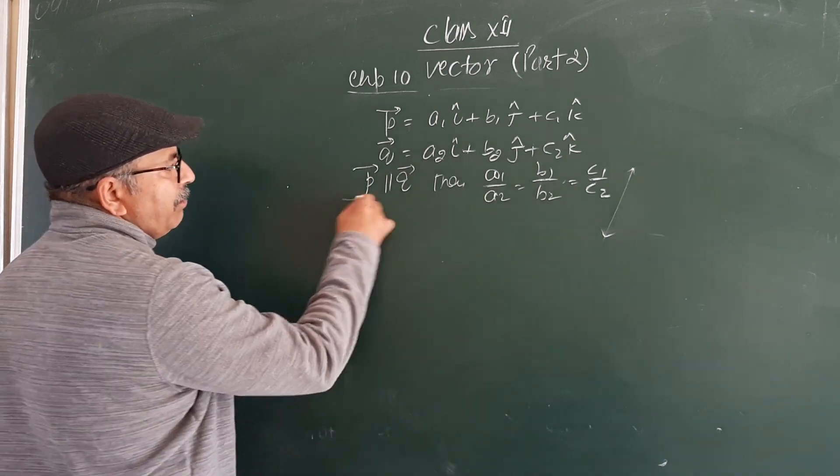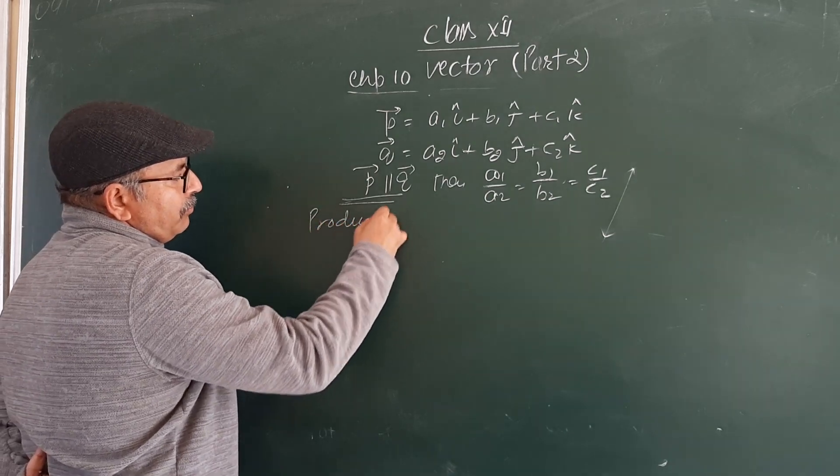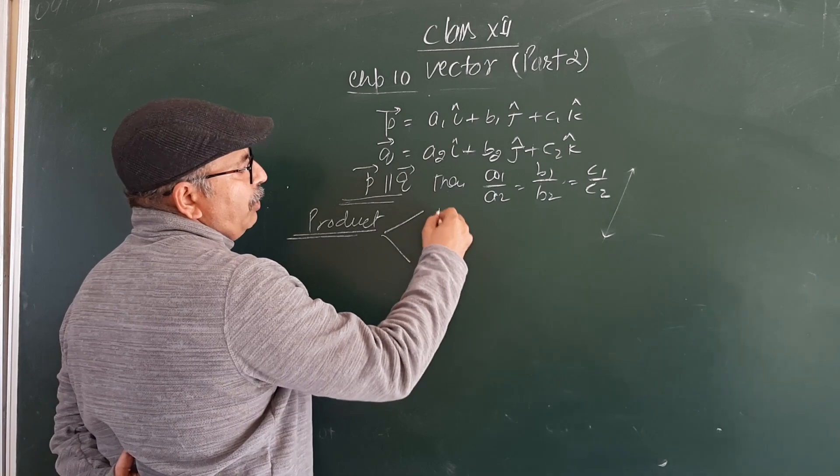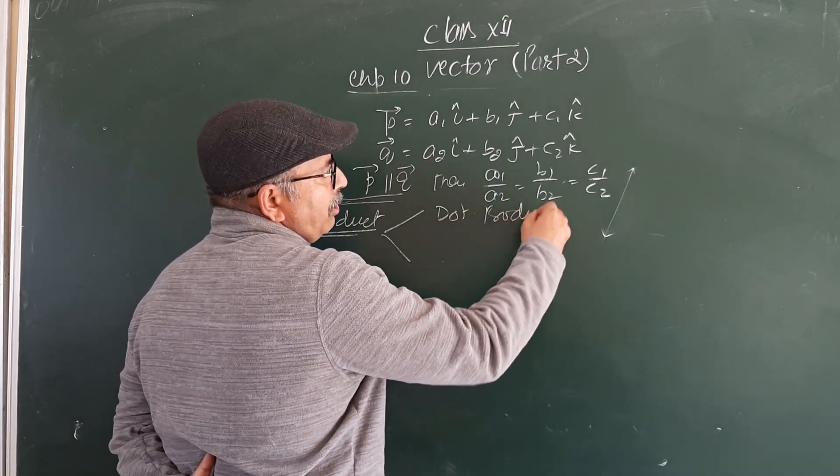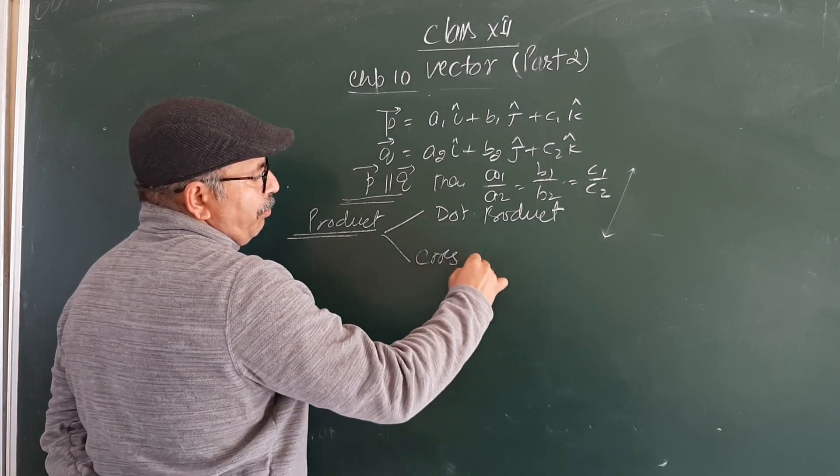Secondly, this is the product. There are two types of product. One is dot product, and second is cross product.